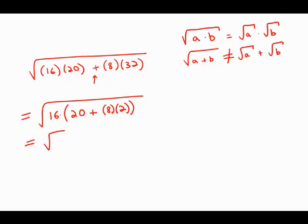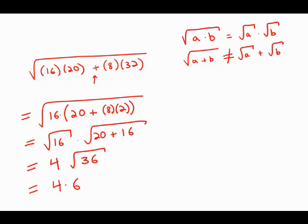Now I can separate by multiplication: square root of 16 times the square root of 20 plus 16. The square root of 16 is 4, and 20 plus 16 is 36. The square root of 36 is 6, so this is just 4 times 6, which is 24.